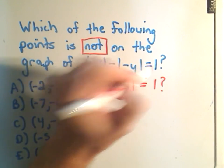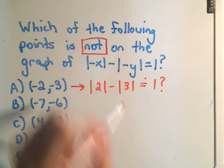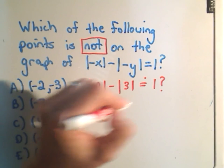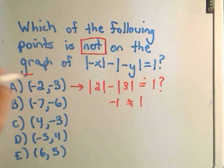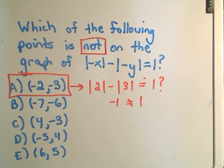Well, does that equal 1? Well, we get 2 minus 3, which is negative 1. So hey, negative 1 does not equal 1. So ta-da, there's our answer. Negative 2, negative 3 would be the solution.